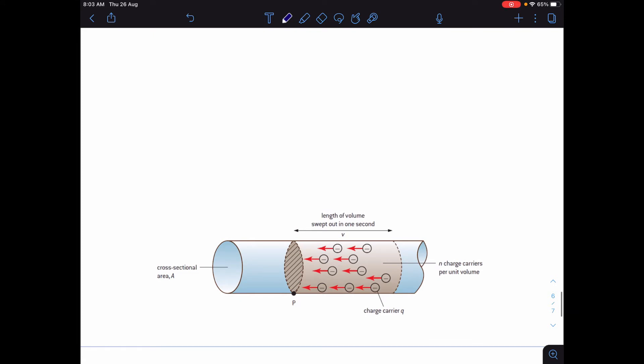Imagine you've got a wire and there's an electric field in the wire due to a battery, and the electrons, the negative charge carriers, are moving through that wire.